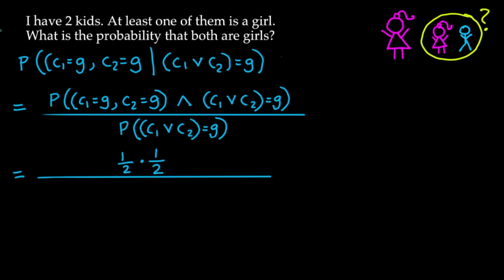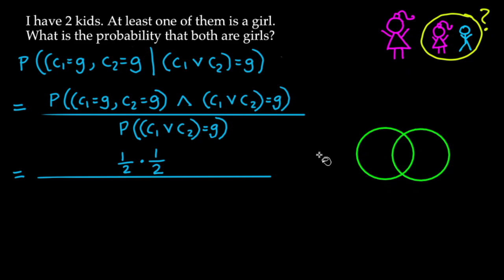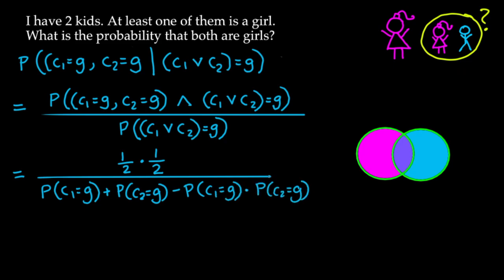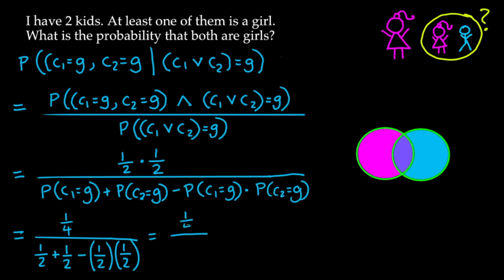When you have an 'or' you might add probabilities, but looking at the Venn diagram, if you let the left side be C1 and right side be C2, shading both sides shows the overlap is counted twice. So we compute P(C1) + P(C2) − P(C1 and C2) = 1/2 + 1/2 − 1/4 = 3/4. The numerator is 1/4, the denominator is 3/4, and we get 1/3 as before.